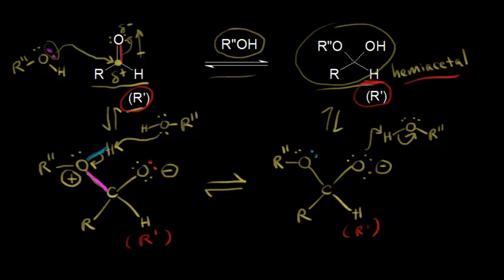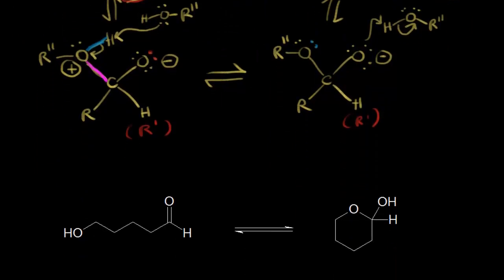This mechanism is not acid- or base-catalyzed — that will be covered in the next video. The formation of hemiacetals usually has an equilibrium that favors the aldehyde or ketone, so it's usually back to the left. However, for the formation of five- or six-membered rings in an intramolecular hemiacetal formation, the equilibrium is actually to the right. Here we have an aldehyde and an alcohol in the same molecule — this is going to be an intramolecular hemiacetal reaction, and we're going to push the equilibrium to the right.